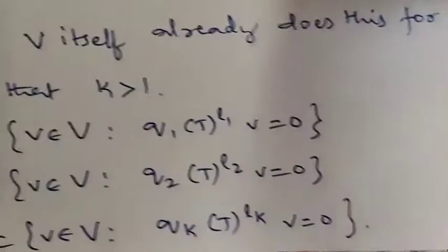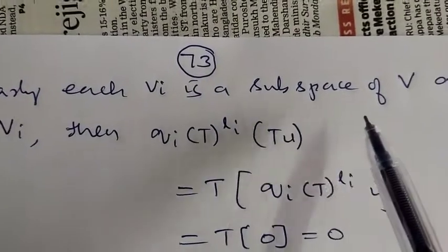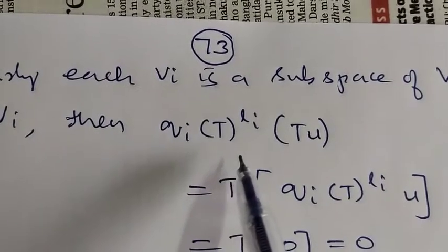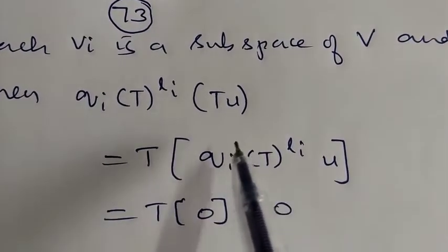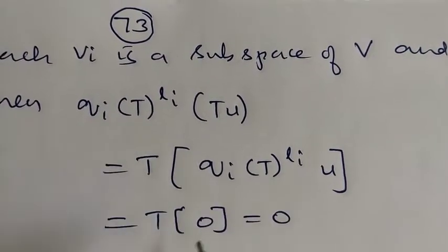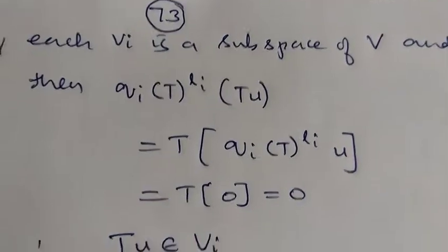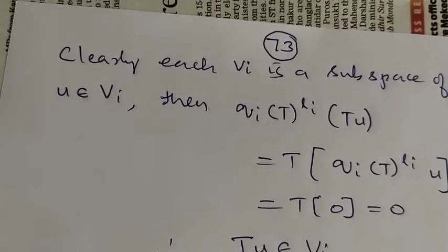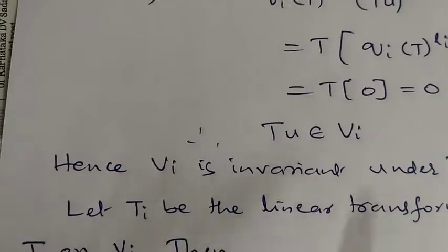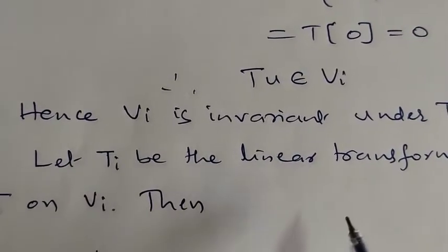Clearly each Vi is a subspace of V. Moreover, if U belongs to Vi, then Qi(T)^Li(T(U)) = T(Qi(T)^Li(U)) = T(0) = 0, so T(U) also belongs to Vi. Therefore each Vi is invariant under T, and T induces a transformation Ti on each Vi.